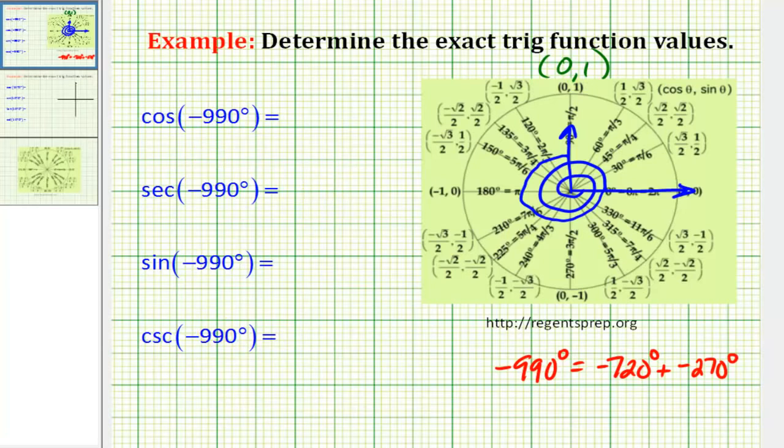Remember, on the unit circle, x is equal to cosine theta, so cosine theta would be equal to zero. And sine theta would be equal to the y-coordinate, or one.